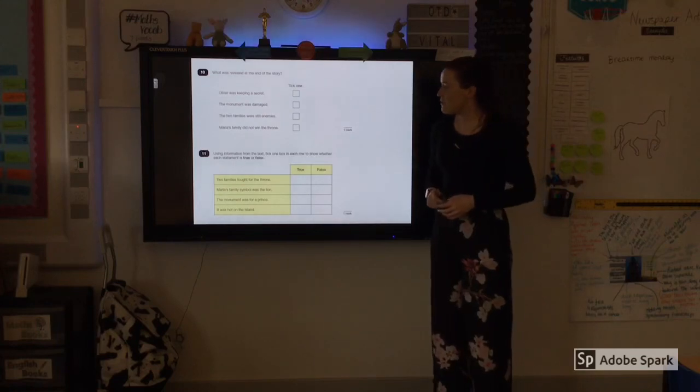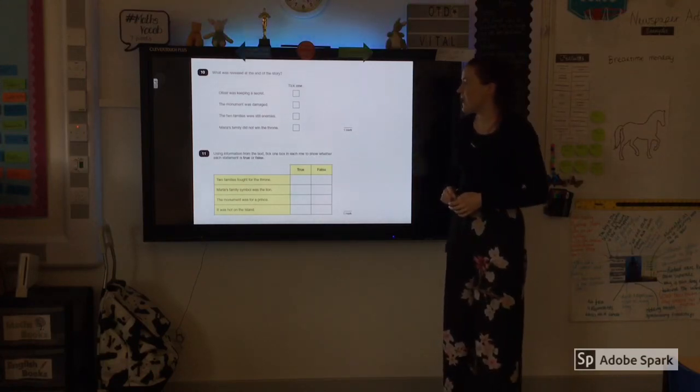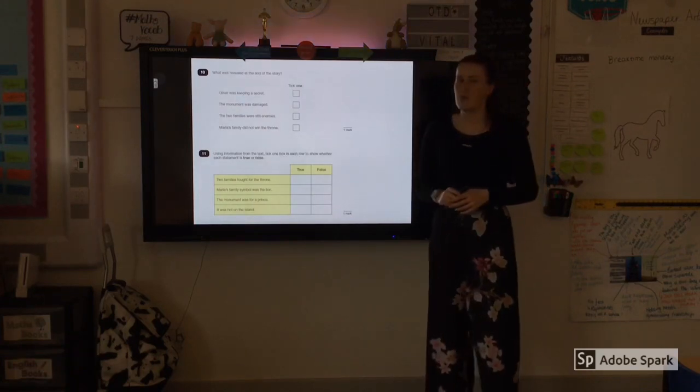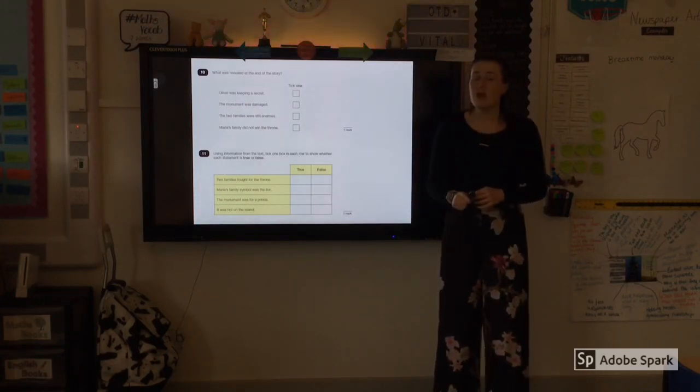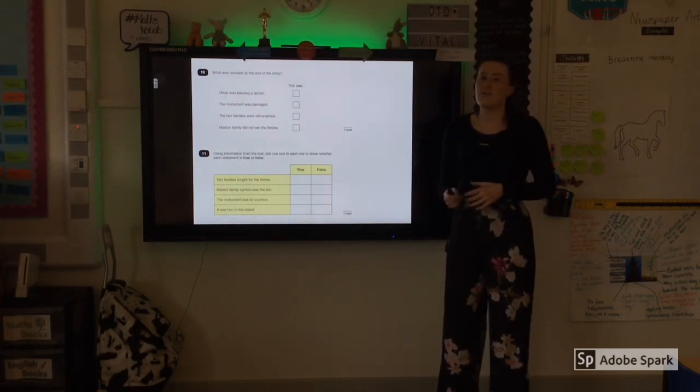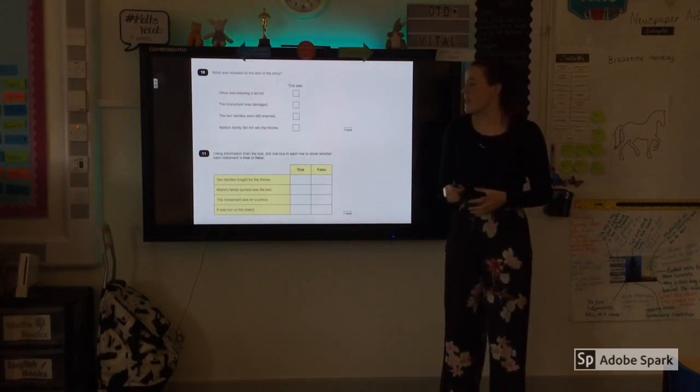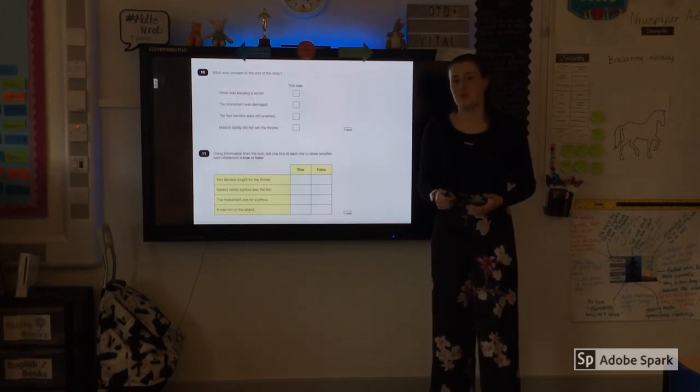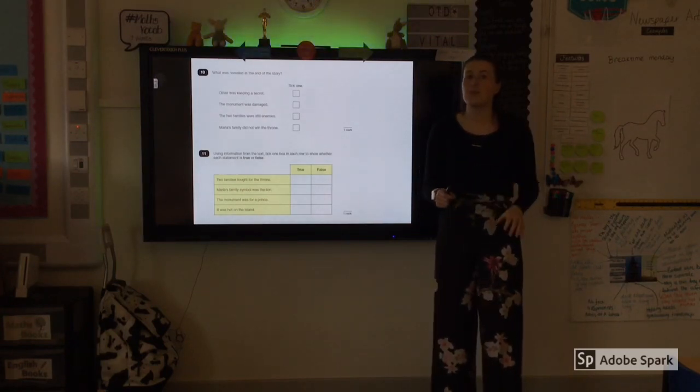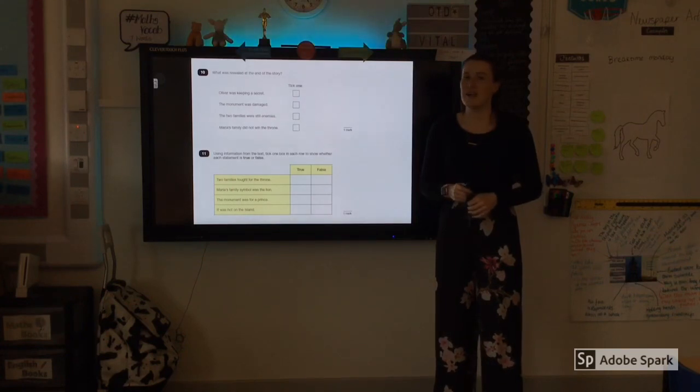Number eleven. Using information from the text, tick one box in each row to show whether each statement is true or false. Be careful when you are doing this question because, as I or Sixers have found, if you go back into the text, sometimes they might make a statement that appears true or false but has had a couple of words tweaked. So make sure that you go back into the text to find each individual statement to double check whether it's true or false because we know that they like to try and catch you out.